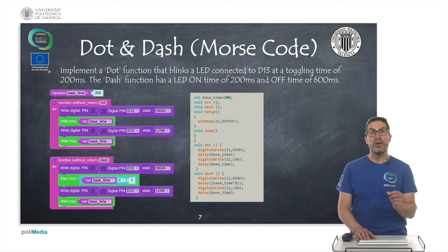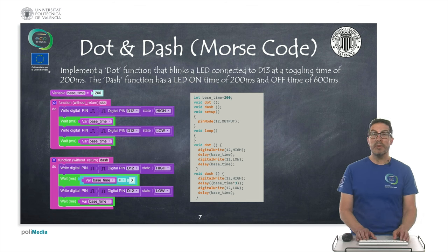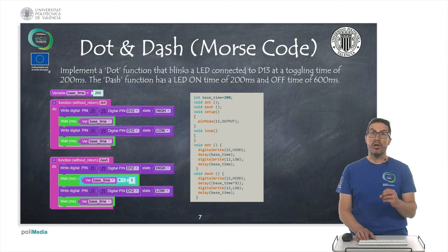In particular, the dot function will set an LED which is connected to pin 13 and will have a toggling time equivalent for on and off period of 200 milliseconds. But the dash function will turn on the LED for 200 milliseconds and turn it off for 600 milliseconds.